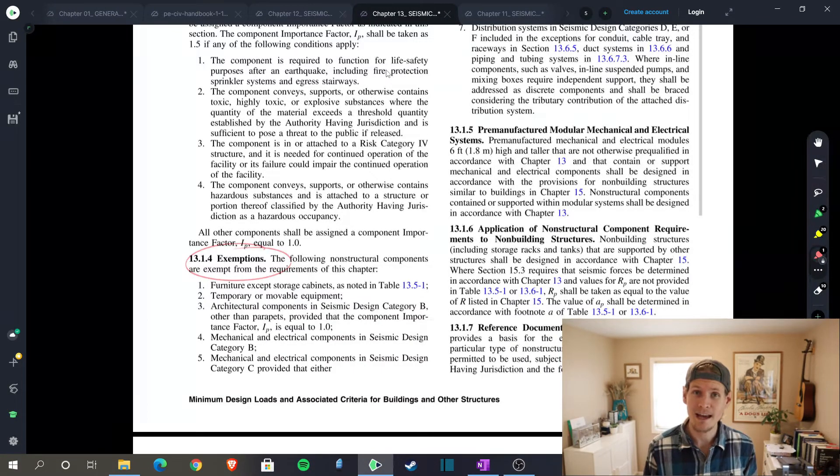exempt from having to actually do structural engineering for your anchorage of your unit. If you do fall into the exempt category, that means that you as an engineer don't need to actually calculate and design anchorage requirements for the units. So you always want to check these exemptions because if you're inside of them, then your job as the engineer is done.